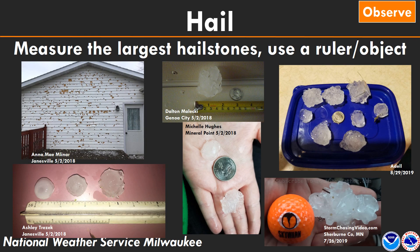Hail is probably one of the easiest types of severe weather to document and report. All you need to do is measure the biggest hailstone at its diameter — across the widest part — and send that in. Many people take a picture of the hailstone with a ruler next to it. If you don't have a ruler, a quarter is a good reference object. Anything bigger than a quarter would be considered a severe hailstone. In general, using a ruler is best.